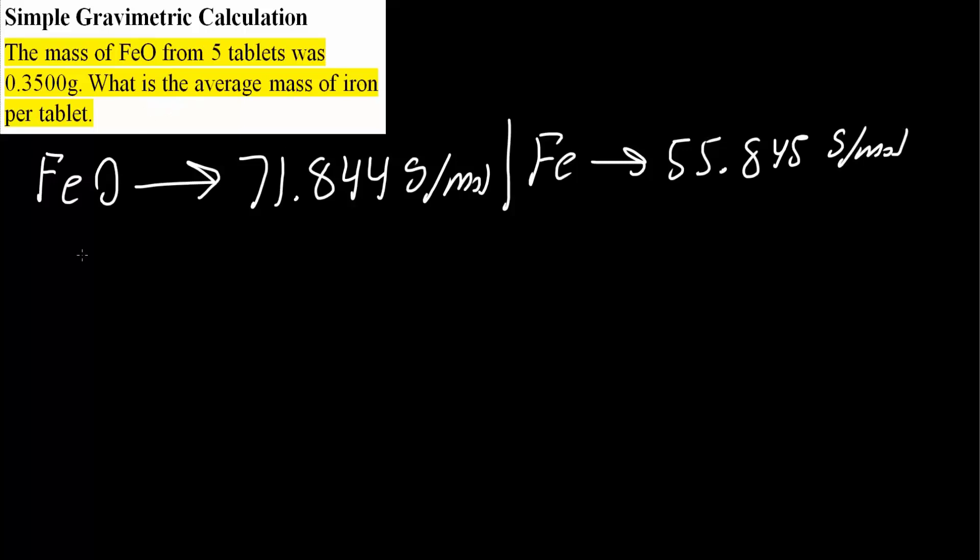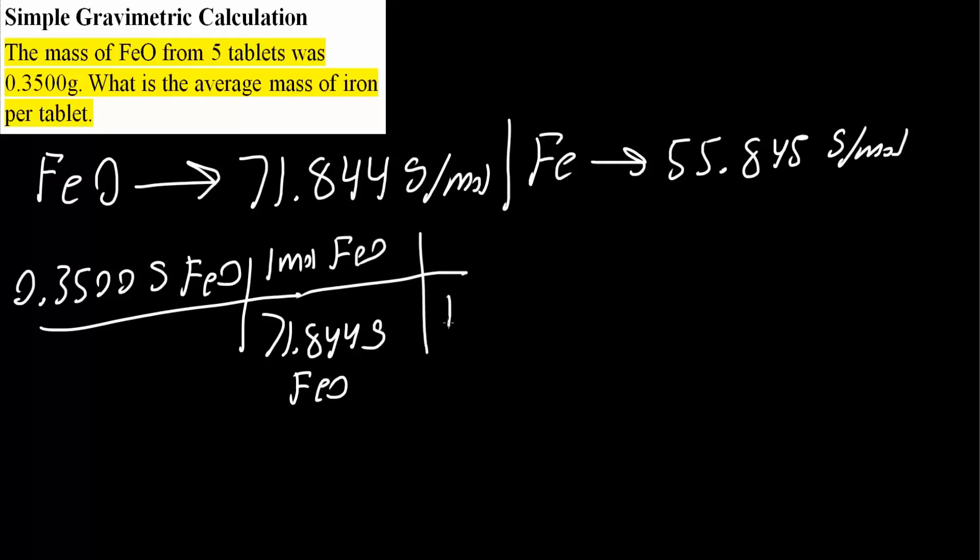In total with five tablets we have 0.3500 grams of FeO. We know the molecular weight for FeO is 71.844 grams per mole, which would contain one mole of FeO. From here we know that one mole of FeO contains one mole of Fe.